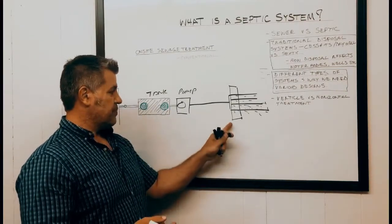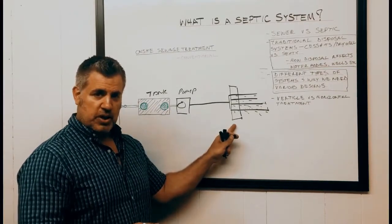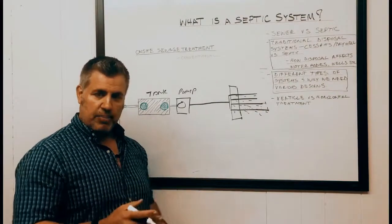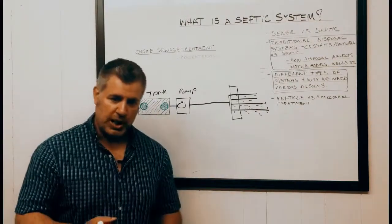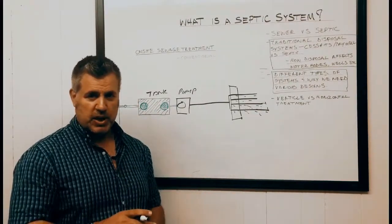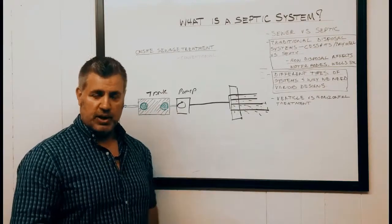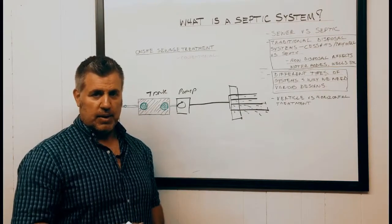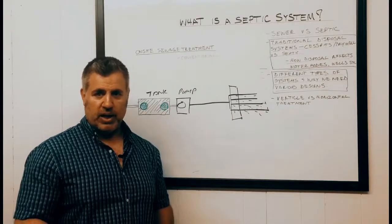It's not very efficient at treating the effluent, and that's why we need these huge drain fields when it comes to gravity septic systems. With pressure distribution systems, we have an allotment in our code book which allows us to reduce our field size because it's a lot more efficient at distributing that wastewater.